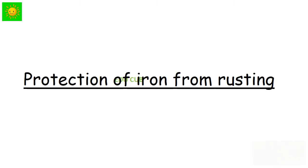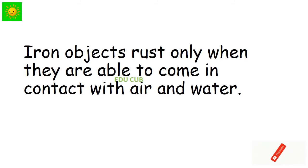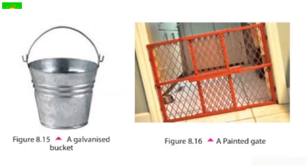Our next topic is protection of iron from rusting. Iron objects rust only when they are able to come in contact with air and water. You can see in the first figure a galvanized bucket, second one a painted gate.